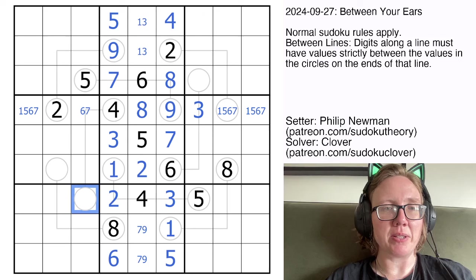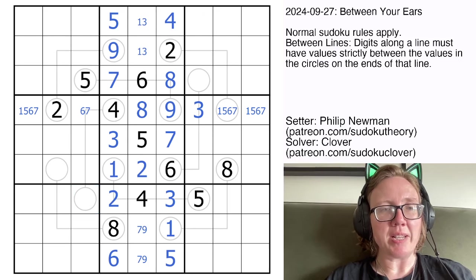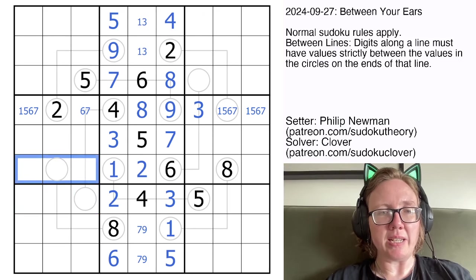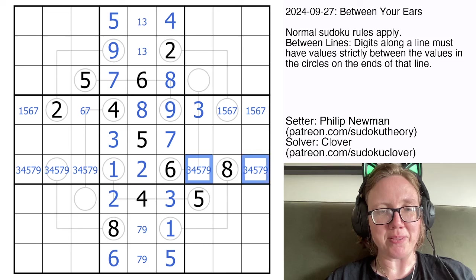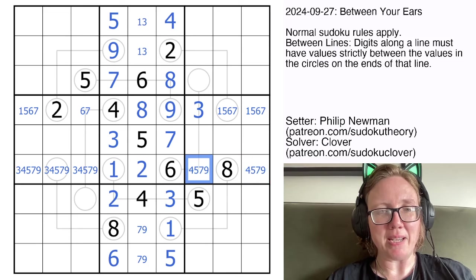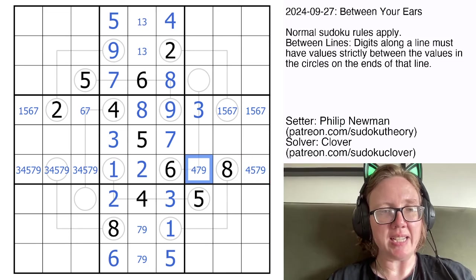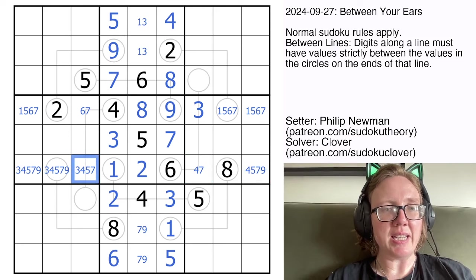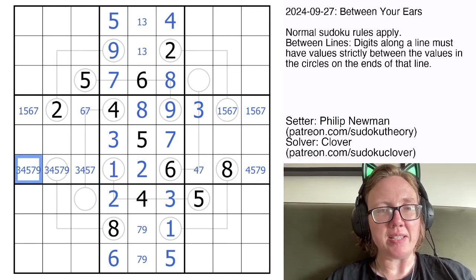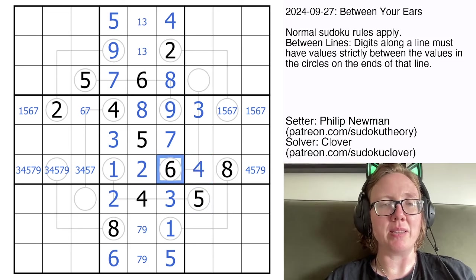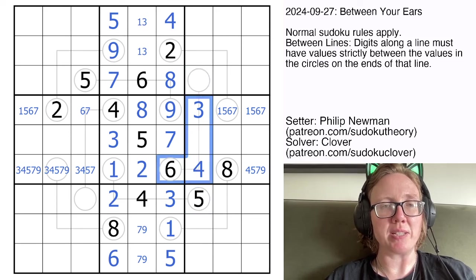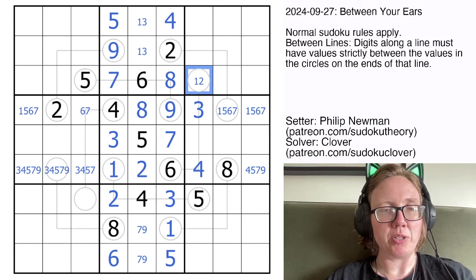We're going to get something very similar down here, where in this row we need 3, 5, 7, 9, and 4. Ignore that I did those in fully the wrong order. This can't be a 5 or a 9. This can't be a 9, and I think that's all of the easy eliminations that we can make. We can actually conclude that this has to be a 4 because it has to be lower than 6 in order for this between line to work. So the other end of this between line will be 1 or 2.